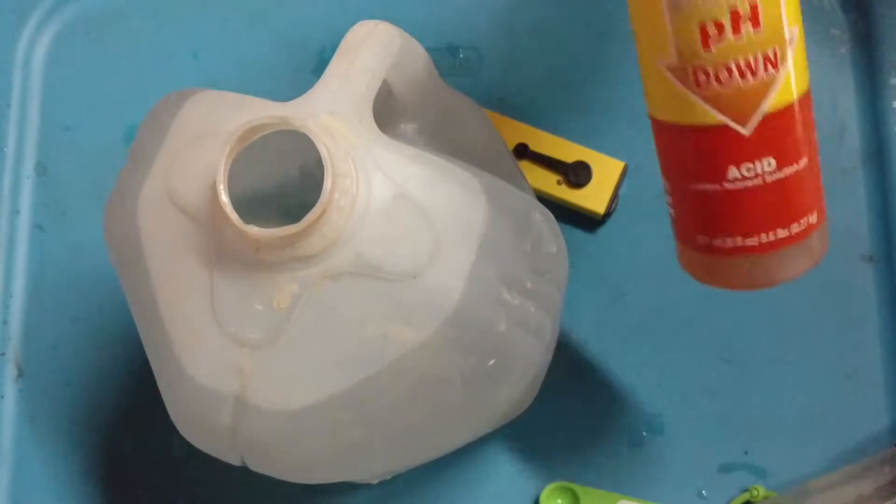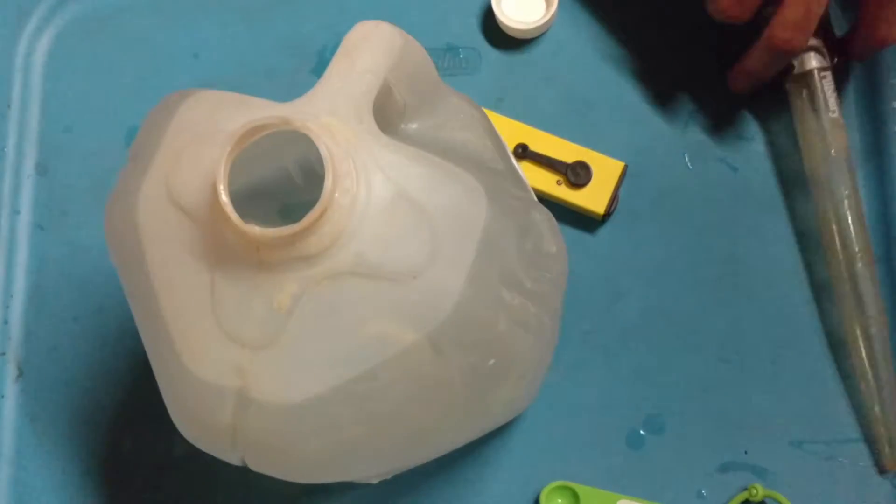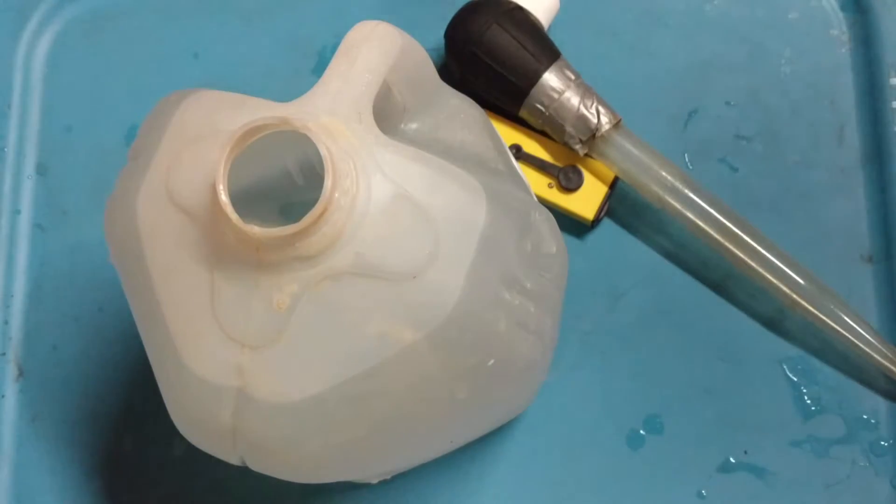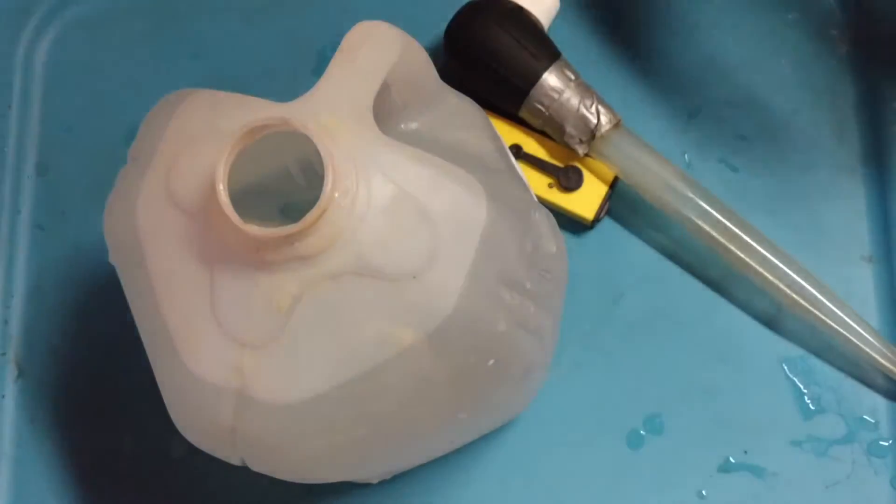We're gonna give her a little bit of pH down, try to get her down to about 6.5. It's different depending on what medium you're growing in. I believe if you're growing hydro, you want a little bit lower pH, I'm growing in soil.